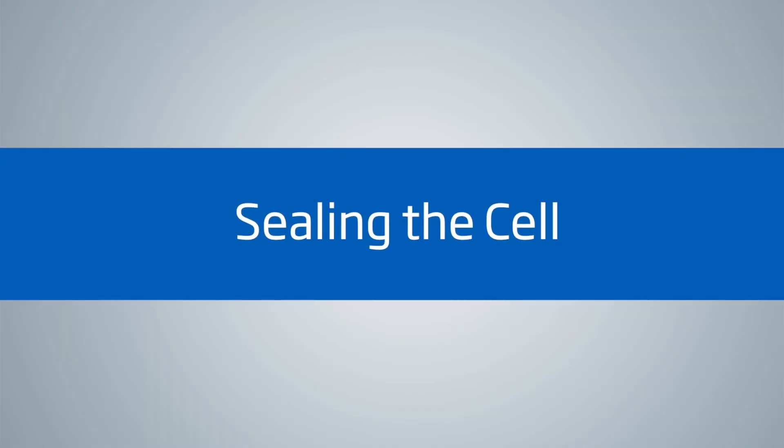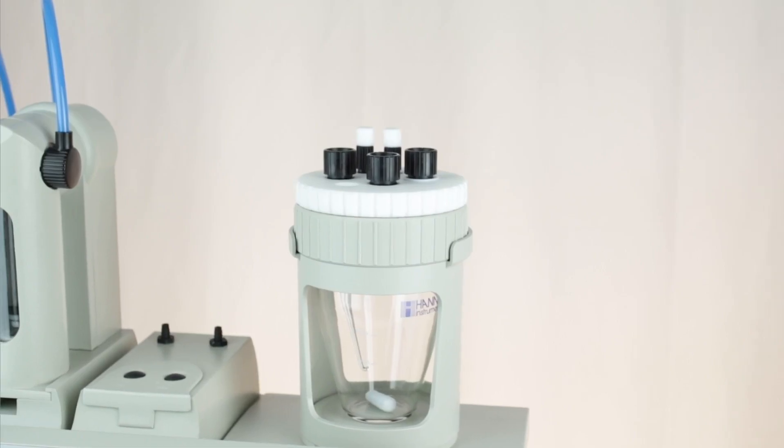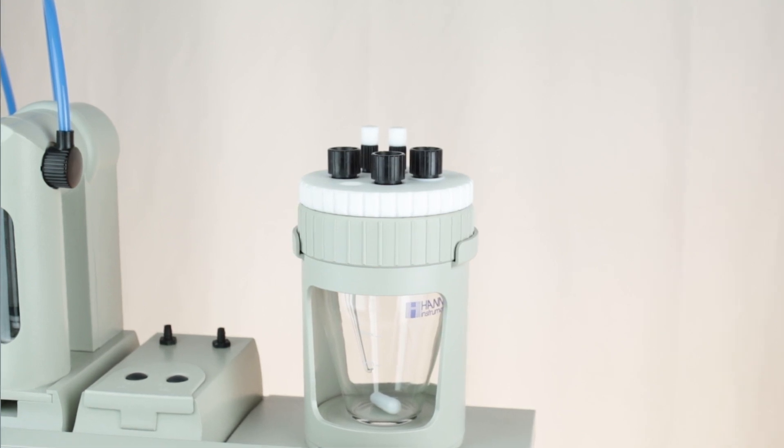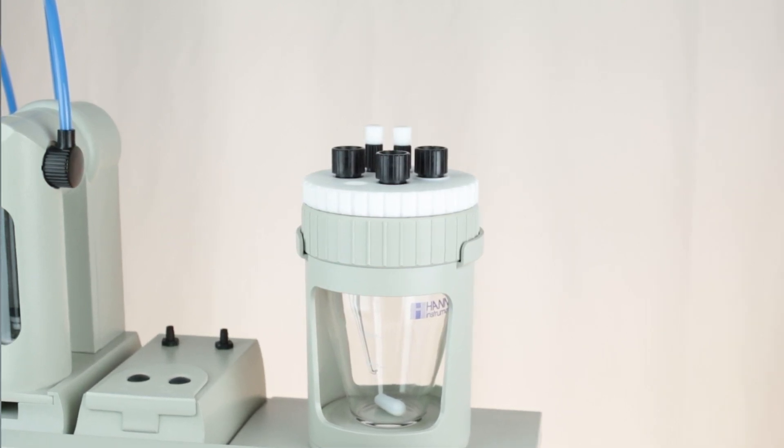Now, we'll work on sealing the cell. Karl Fischer titrations take place in a sealed vessel to prevent atmospheric moisture from getting in. This piece of Karl Fischer titration equipment uses compression fittings to accomplish this. We will remove and reinstall each fitting being used.